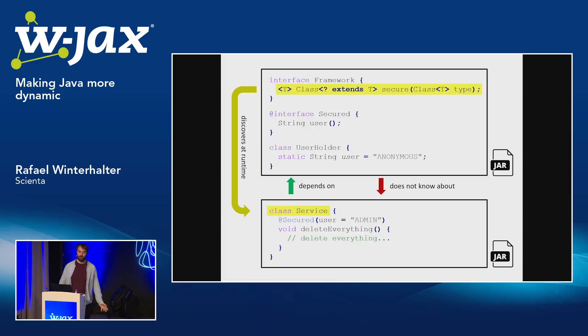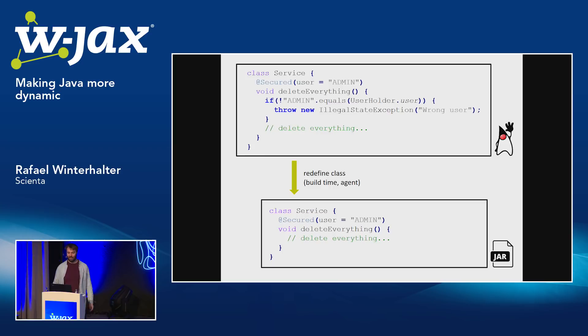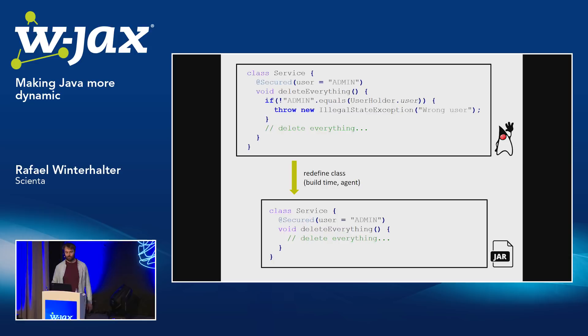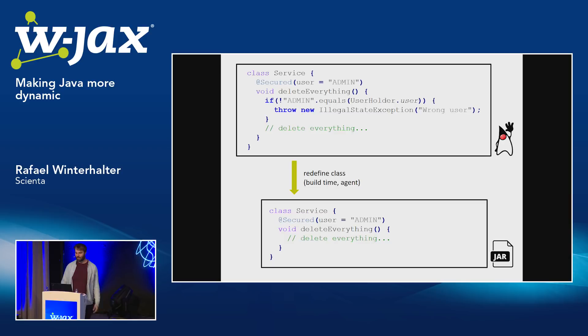Runtime code generation is so popular because it allows you to statically bind two code segments that otherwise don't know each other. How would you implement a secured service? In the most trivial case, you would just inline a check into the method you are annotating. For example, a Maven build tool can scan through all of your code, find all methods annotated with a certain annotation, and copy-paste this code segment at the beginning of the method. This check is effective because if you don't have the correct user logged in, the exception will prevent the actual delete code from ever being triggered.